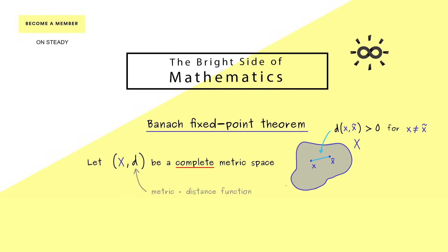So that is a metric space in a nutshell — we can measure distances in the set X. This means we can consider sequences, and terms like convergence and Cauchy sequences make sense. Completeness here means exactly the same as for real numbers: all possible Cauchy sequences are actually convergent sequences. Often we simply say completeness means there are no holes in the space.